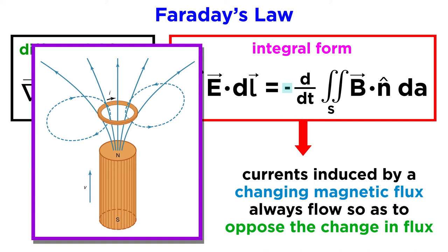Thus, as the magnetic flux through the circuit increases, the induced current produces its own magnetic flux in the opposite direction to offset the increase.